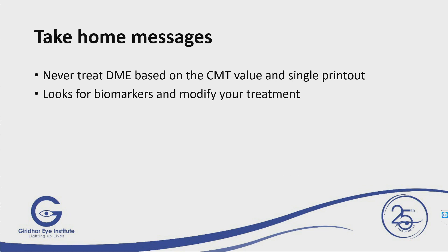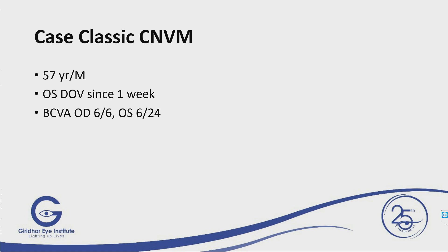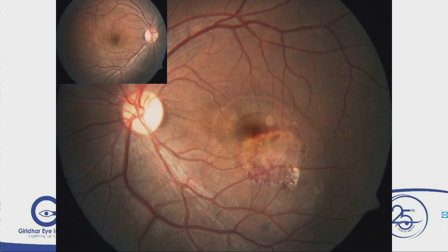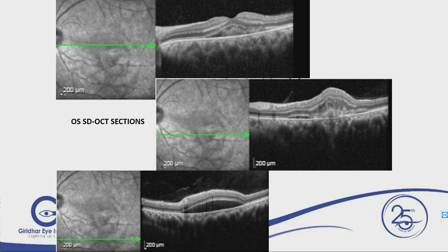So the summary for DME: never treat based on central macular thickness alone — look for biomarkers and modify your treatment. Now coming to AMD — in the OCT you have to look at different sections. If you see only the central section, there is some hyperreflective area just in front of the ellipsoid line, but in the lower sections you can see features suggestive of classic choroidal neovascular membrane.